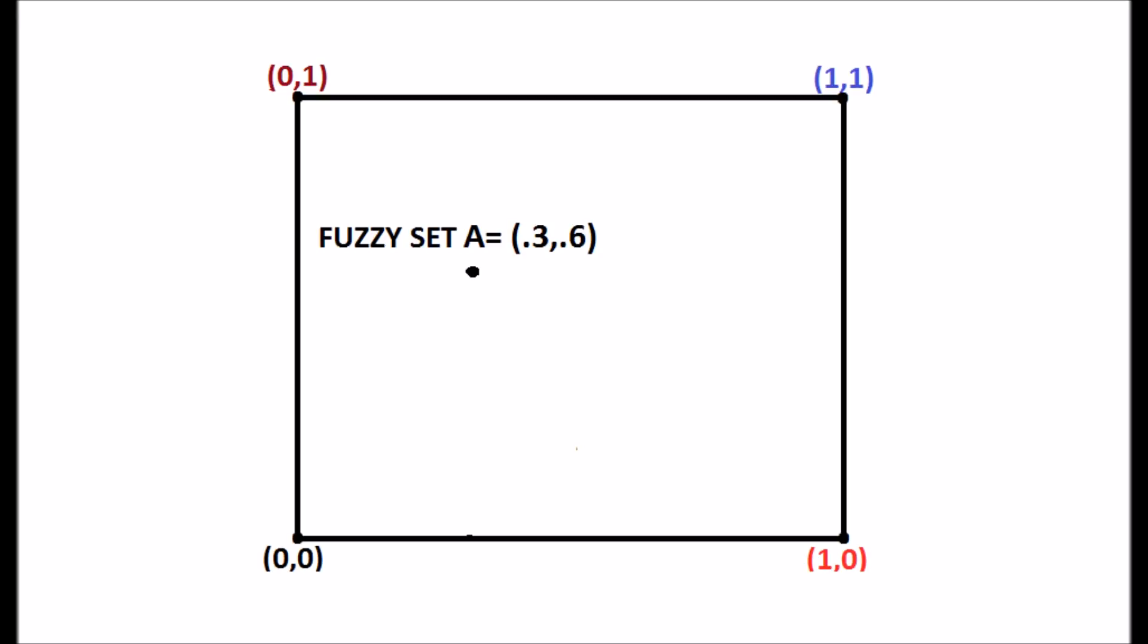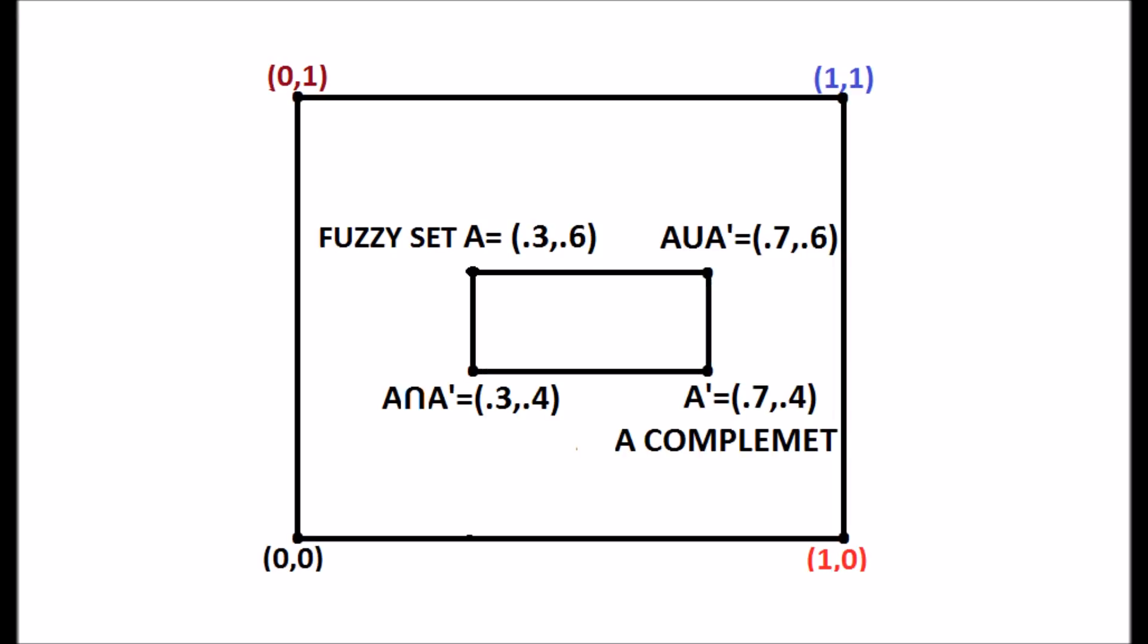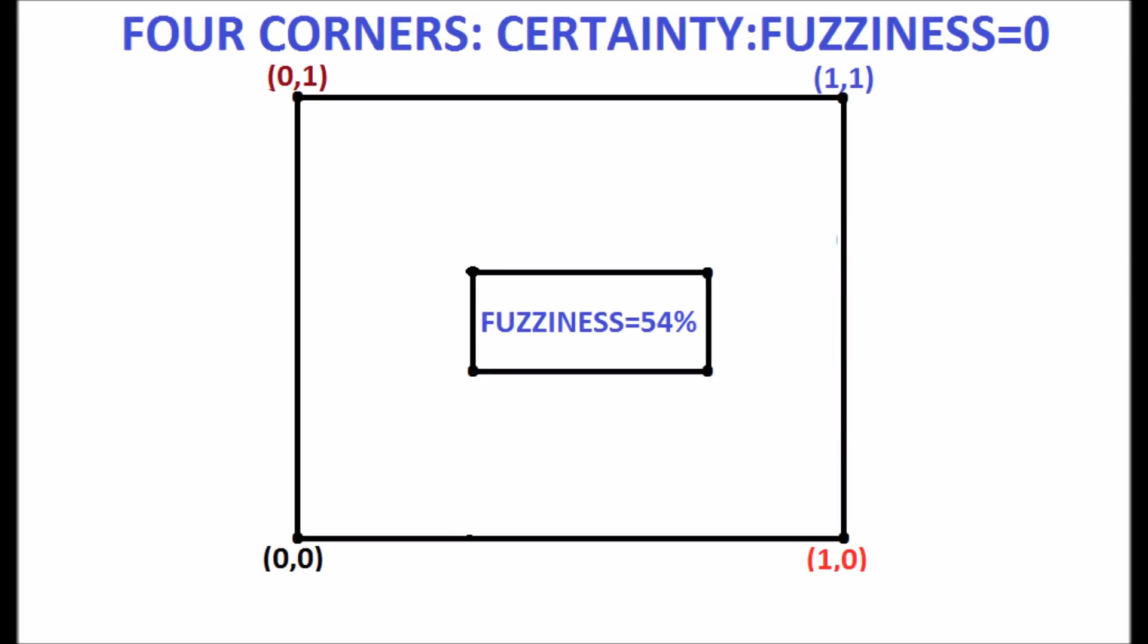Similarly, fuzzy set A, its complement A prime, A intersection with A complement, A union with A complement forms a square or rectangle inside the unit square as shown in the display. Similarly, other fuzzy sets are forming a square and rectangle inside the unit square.